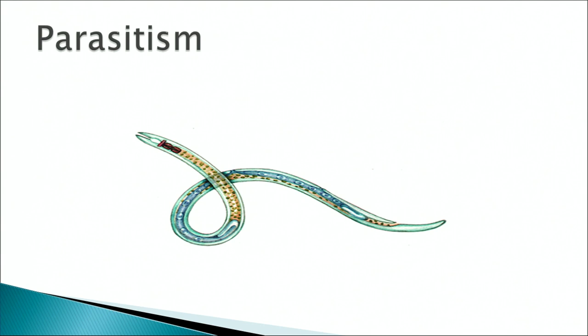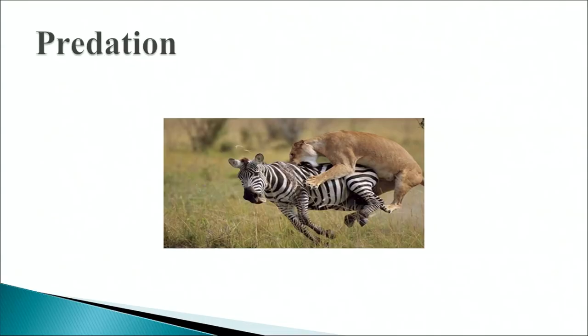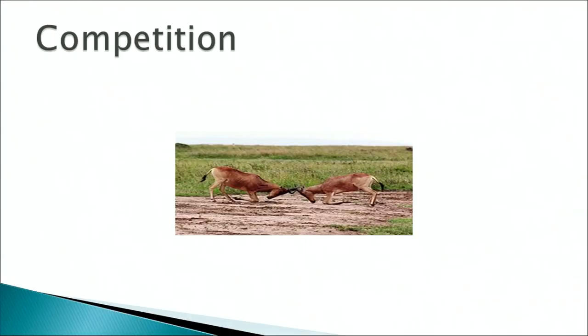Parasitism: nematodes or roundworms are incredibly common animals — many are parasites living in the intestines of other animals such as birds and mammals. One species inhabits the gut of the sperm whale. Many are serious parasites of humans, such as Wuchereria bancrofti, which causes elephantiasis. Predation: in an ecosystem, predation is a biological interaction where a predator (an organism that is hunting) feeds on its prey (the organism that is attacked). The act of predation often results in the death of the prey and absorption of the prey's tissues through consumption.